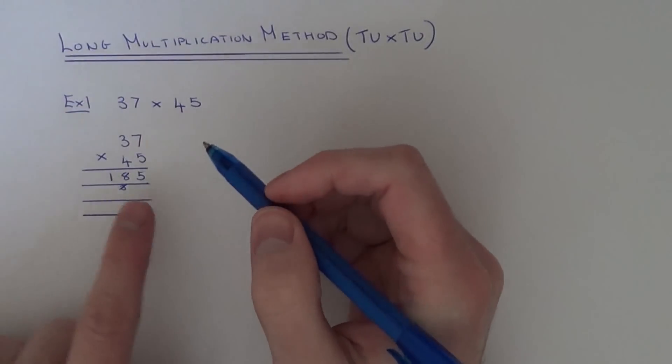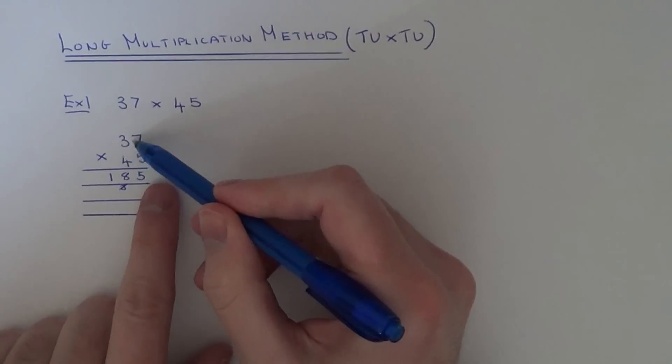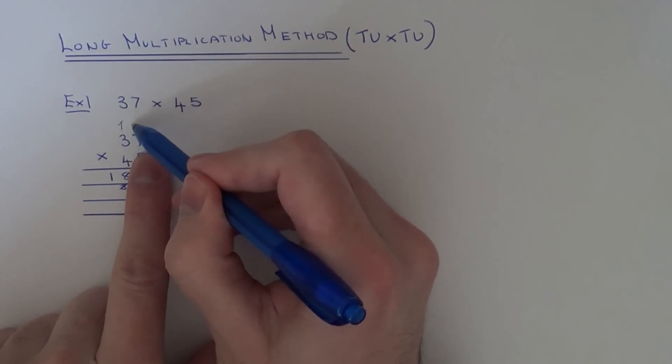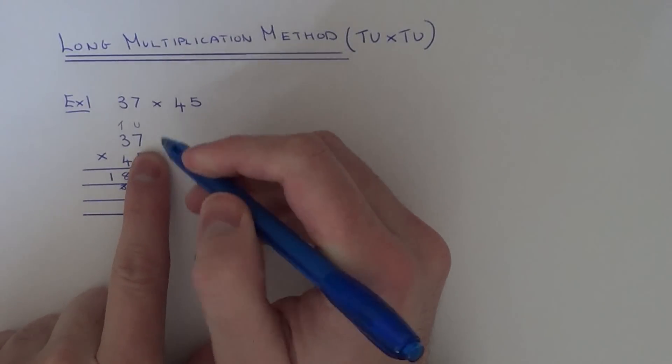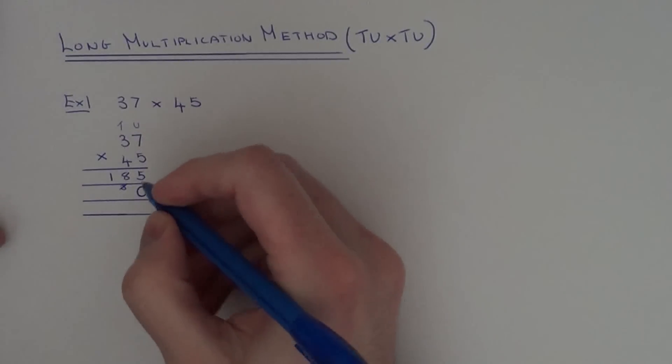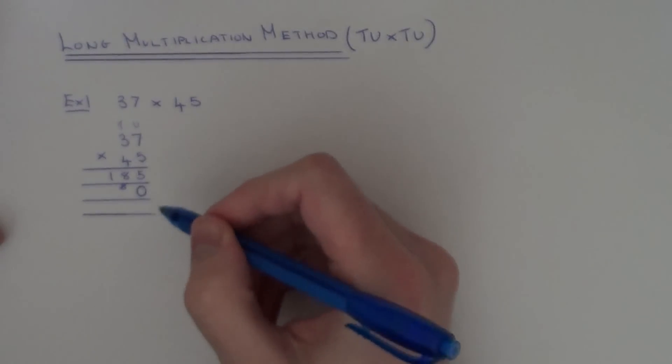Right, the next line we have to work out 37 times 4. But the 4 is in the tens column, so it's actually forty being multiplied by. So on your second line, what you need to do is just put a zero at the start of that line, because we're multiplying by the forty, not just four.